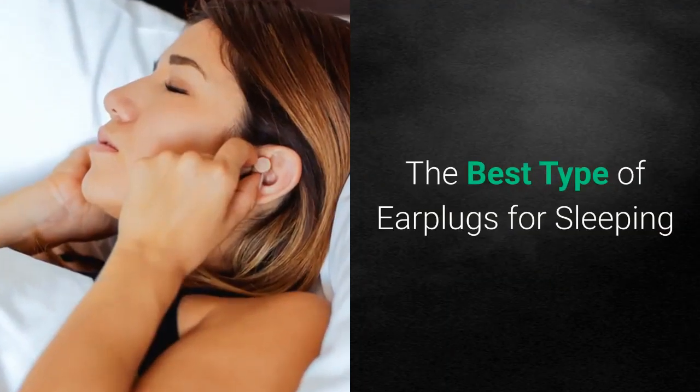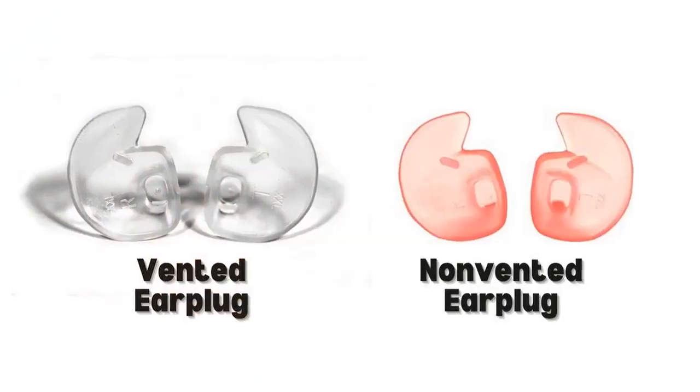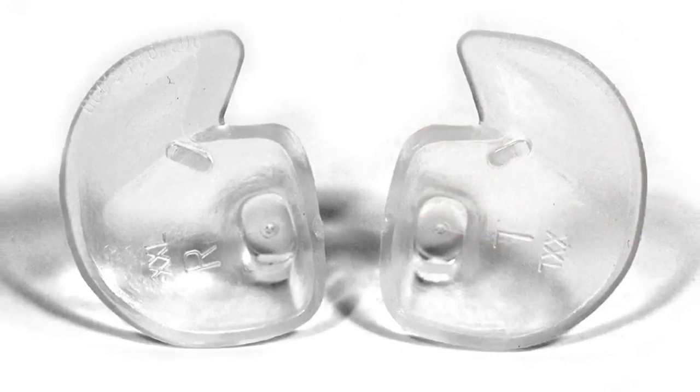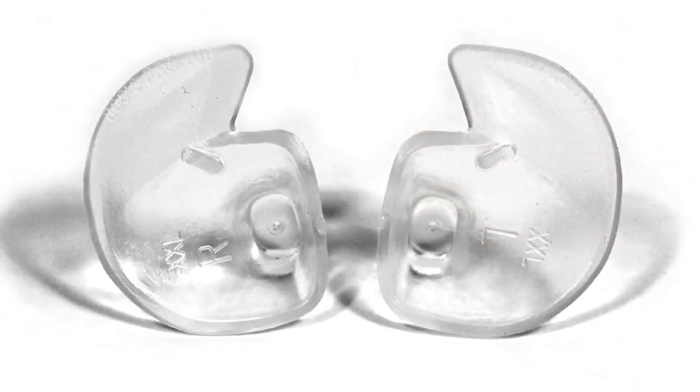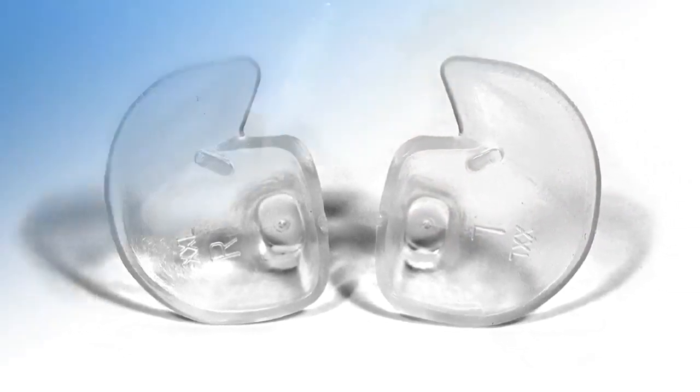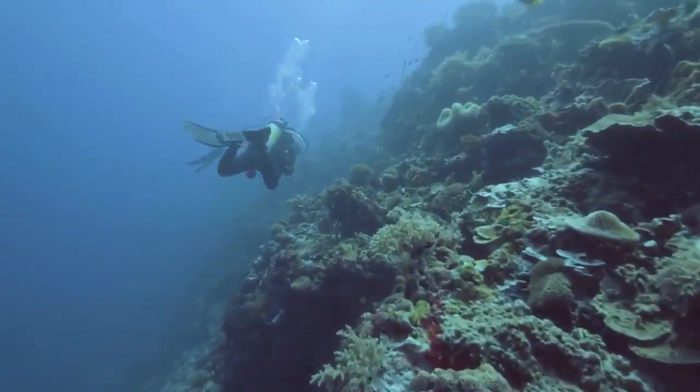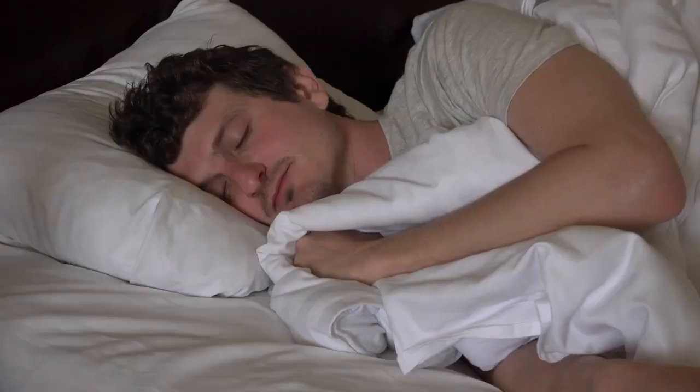The best type of earplugs for sleeping: Earplugs are generally divided into vented and non-vented types. Vented earplugs have a small hole which helps equalize the pressure in your ear. These are useful for flying and scuba diving, but don't work any better than non-vented earplugs when it comes to sleeping.